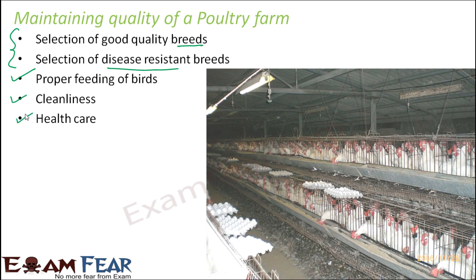Health care is also essential — the birds need to be regularly visited by doctors or checked for any disease symptoms. There are certain pathogenic strains of virus, for example H5N1, which attacks mostly farm birds — about 84% of cases attack chickens and farm birds, with only around 15% attacking wild birds. Since we mostly eat farm birds, and these viruses mostly attack farm birds, it is all the more important to ensure that the birds kept in the poultry are disease free and healthy. These are some of the things to ensure a quality poultry farm.